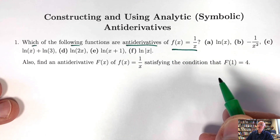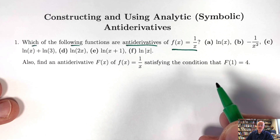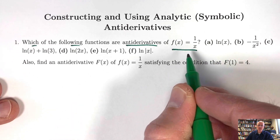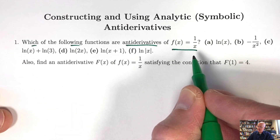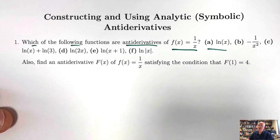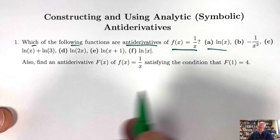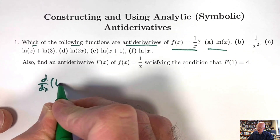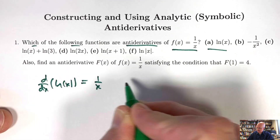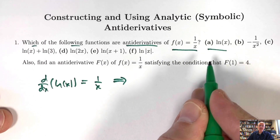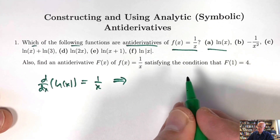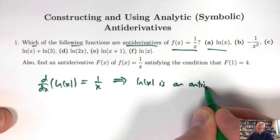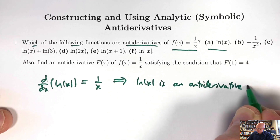We've talked about antiderivatives already. An antiderivative of a function is a function whose derivative is the given function. So we're looking for which of these functions has a derivative equal to 1/x. Choice A definitely does. We know from facts about derivatives that the derivative of the natural log of x equals 1/x, and that is enough to imply that natural log of x is an antiderivative of 1/x.